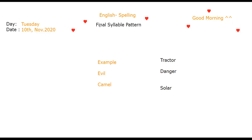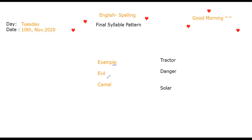What does it mean? It means that if you have some words like example, evil, camel — all of them, when you hear the sound, it will give you one sound. It's the L sound. But when you want to write it, you will find that each one is different. Example ends with L-E, evil ends with I-L, camel ends with E-L.